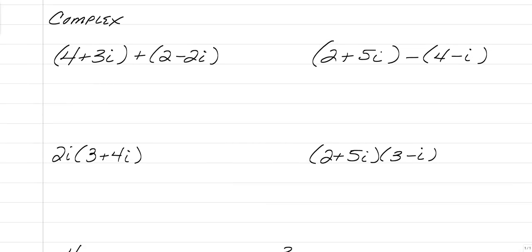Let's talk about how we work with imaginary numbers. When you work with imaginary numbers, you treat them like a variable, but you have to remember that it's also a number. When you're just adding and subtracting, it's just like combining like terms. So 4 plus 2 gives you 6, and 3i plus negative 2i gives you positive 1i. So when you're adding and subtracting, that part does not change much. For example, 2 minus 4 is negative 2, and 5i minus negative i gives you 6i. Notice that I am writing it with the real number first and then the imaginary number — that is standard form when working with complex numbers.